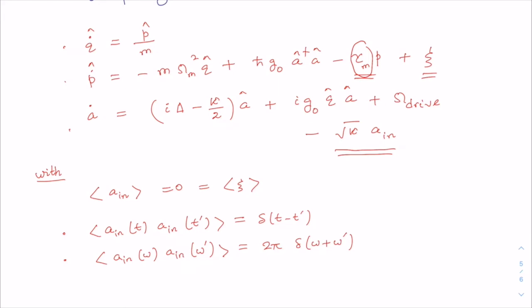Note that these quantum Langevin equations are non-linear. For example, the time evolution of the cavity mode operator a depends on the product qa, which is a product of two operators. No exact analytical solutions to these quantum Langevin equations are currently available. However, we can find the steady state solution in exact algebraic form.